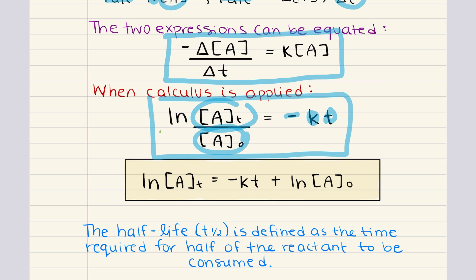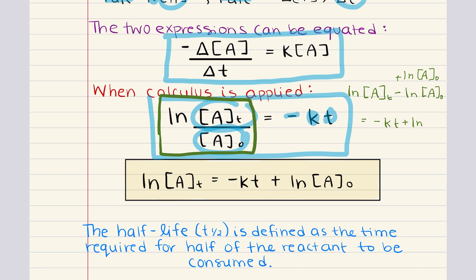This equation can be rearranged into a more common form by expanding the natural log term. When you have the natural log of something in a fraction, you can rewrite it as the natural log of the numerator minus the natural log of the denominator. Setting this equal to negative KT, we then add the natural log of the initial concentration of A to both sides, which cancels on the left. The result, boxed and highlighted, is the integrated rate law for a first-order reaction: ln[A]t = -Kt + ln[A]₀.